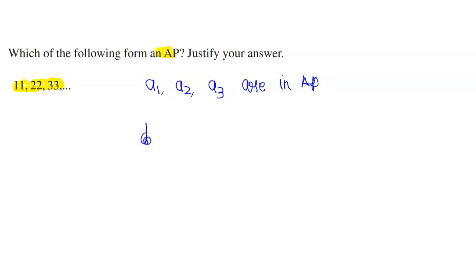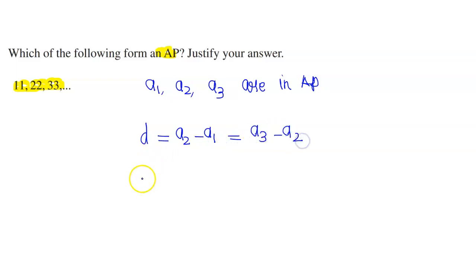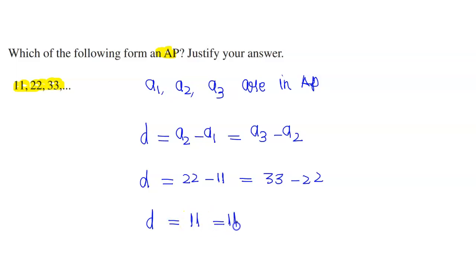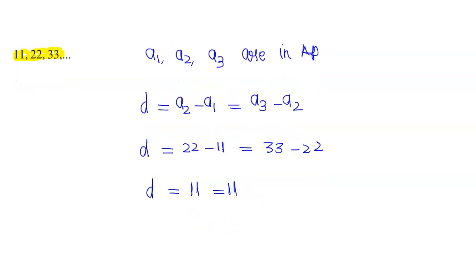What is the common difference? It is A2 minus A1. And A3 minus A2. This is the form of an AP.